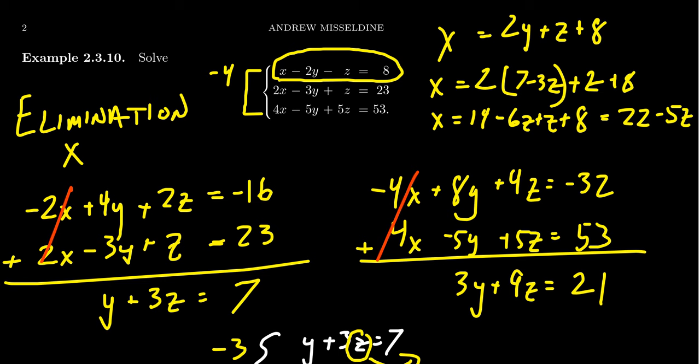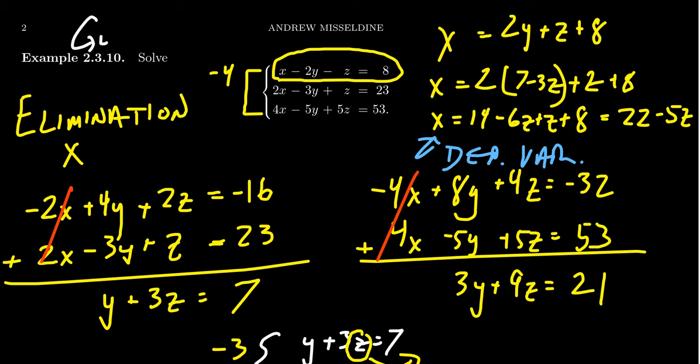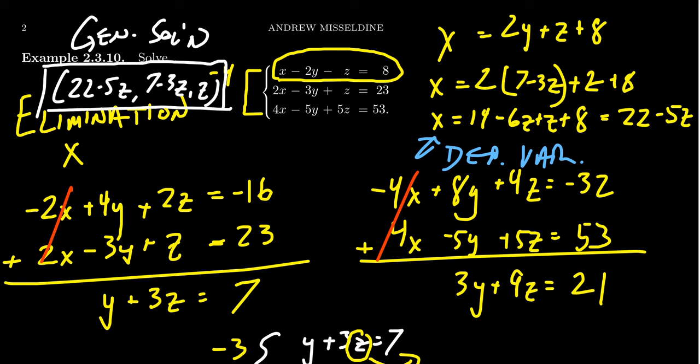And so we see that x is likewise going to be a dependent variable. It depends on the choice of z. And so when we record this all together, our general solution is going to look something like the following. The solution to this system of equations looks like x is going to be 22 minus five z, y is going to be seven minus three z, and then z is whatever she wants to be there. And so this would give us the general solution to this system of linear equations, which we found using the elimination method, which can be adapted for three by three systems, four by four, or however many variables you want.